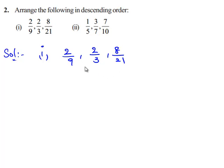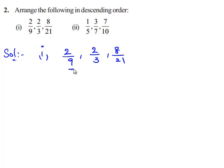To arrange 3 fractions in descending order we need to know which fraction is greater than which. Since the fractions have different denominators we cannot compare them directly, so let us obtain a common denominator for all 3 fractions. To do that, we need to find the LCM of 9, 3, and 21.